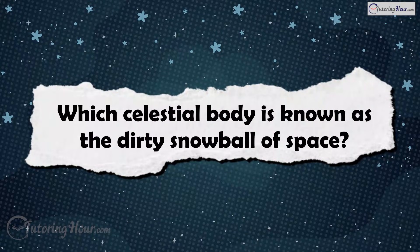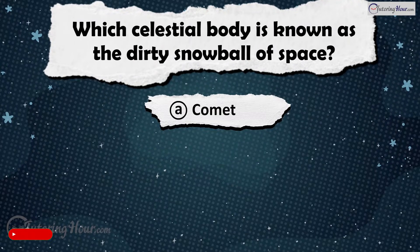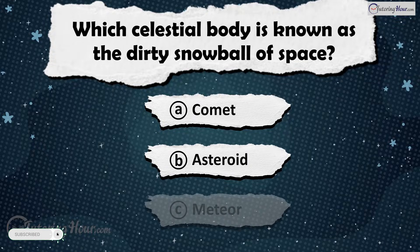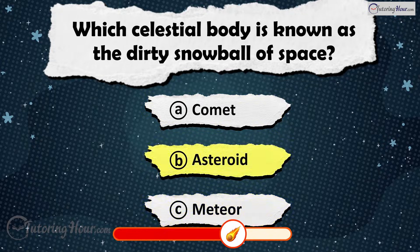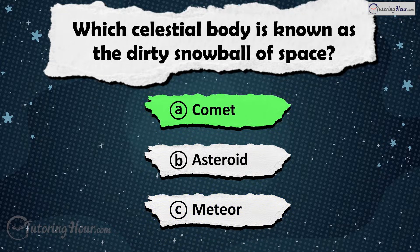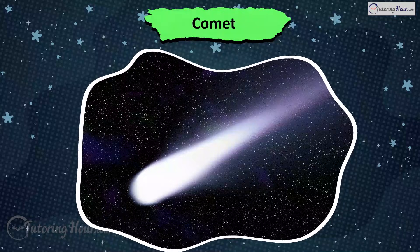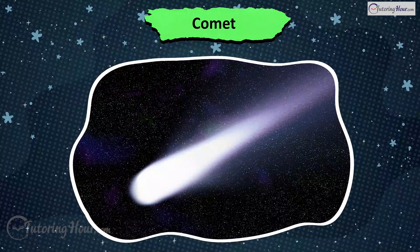Which celestial body is known as the dirty snowball of space? Is it A) Comet, B) Asteroid, or C) Meteor? The answer is Comet. Comets are made of ice, dust and gas, earning them the nickname Dirty Snowballs.